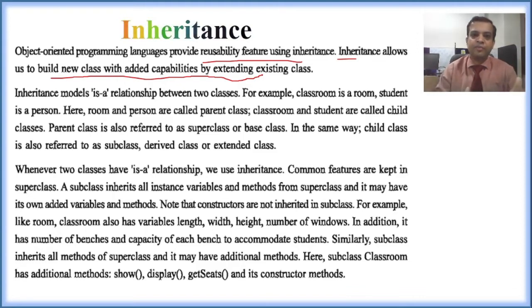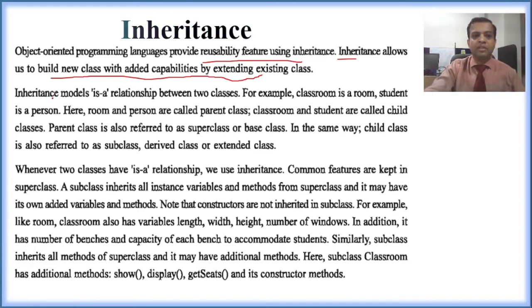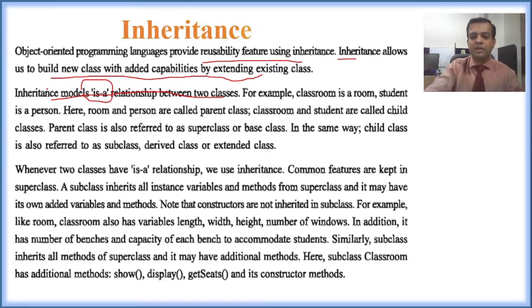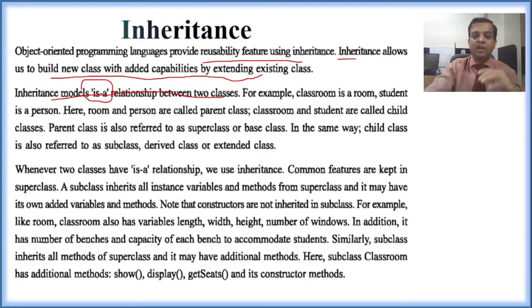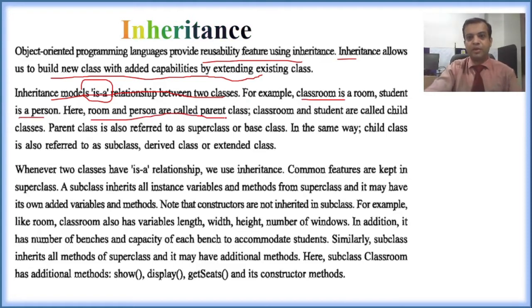Inheritance is an 'is-a' relationship between two classes, which I have already explained in my tutorial on object oriented concepts. For example, classroom is a room, and student is a person. Room and person are called the parent class, while classroom and student are called the child class.